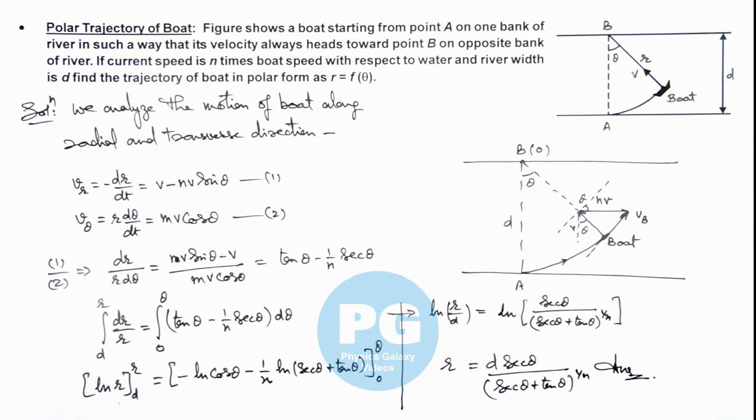Of this problem, the polar trajectory of boat by in the river current by treating point B as origin of this coordinate system.